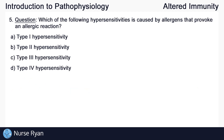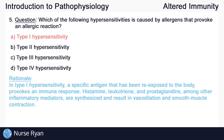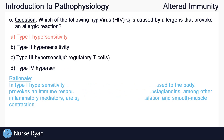Question number five: which of the following hypersensitivities is caused by allergens that provoke an allergic reaction? The answer here is A, type 1 hypersensitivity. In type 1 hypersensitivity, a specific antigen — which in this case is an allergen — that has been re-exposed to the body provokes an immune response. Histamine, leukotriene, and prostaglandins, among other inflammatory mediators, are synthesized and result in vasodilation and smooth muscle contraction.